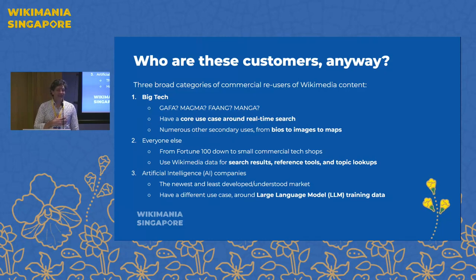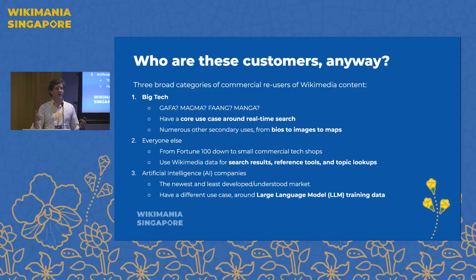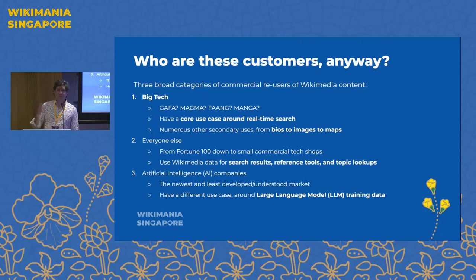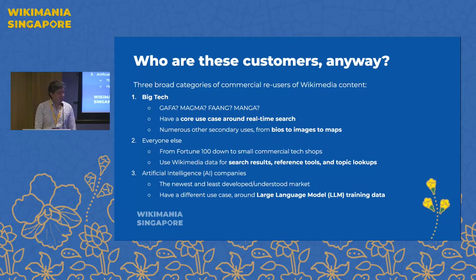They also have a lot of secondary use cases — images, bios, maps, all the things you might imagine. We really discovered that as a sort of the world's common knowledge store, it's hard to find a market that doesn't use Wikimedia data in some way. So we've taken to lumping all of those together into the 'everybody else' category — Fortune 100s all the way down to smaller commercial tech shops. Airlines, biotech firms, major research publishers — you name it, we can find somebody that uses Wikimedia content in some meaningful way, for search results, reference tools, and topic lookups.